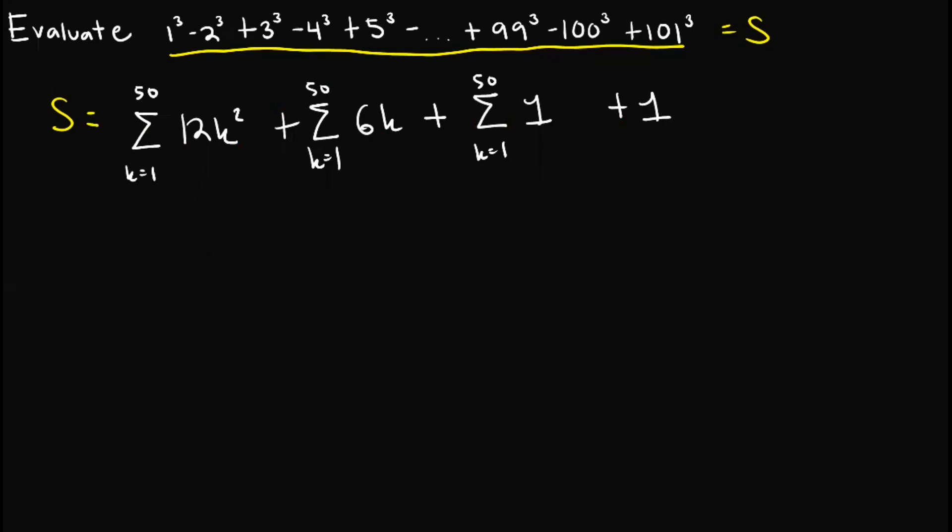And so from here, we can now apply the summation properties that we had a while ago. This one would become summation from k equals 1 to 50 of 12k² plus summation of k equals 1 to 50 of 6k, and the summation from k equals 1 to 50 again of 1 plus 1. Note that we can actually move out this one and this one. And also for this one, since this is a constant, we can apply the rule a while ago wherein this one is simply equal to cn. But for this one, we have the constant 1 times the number of terms which is 50.